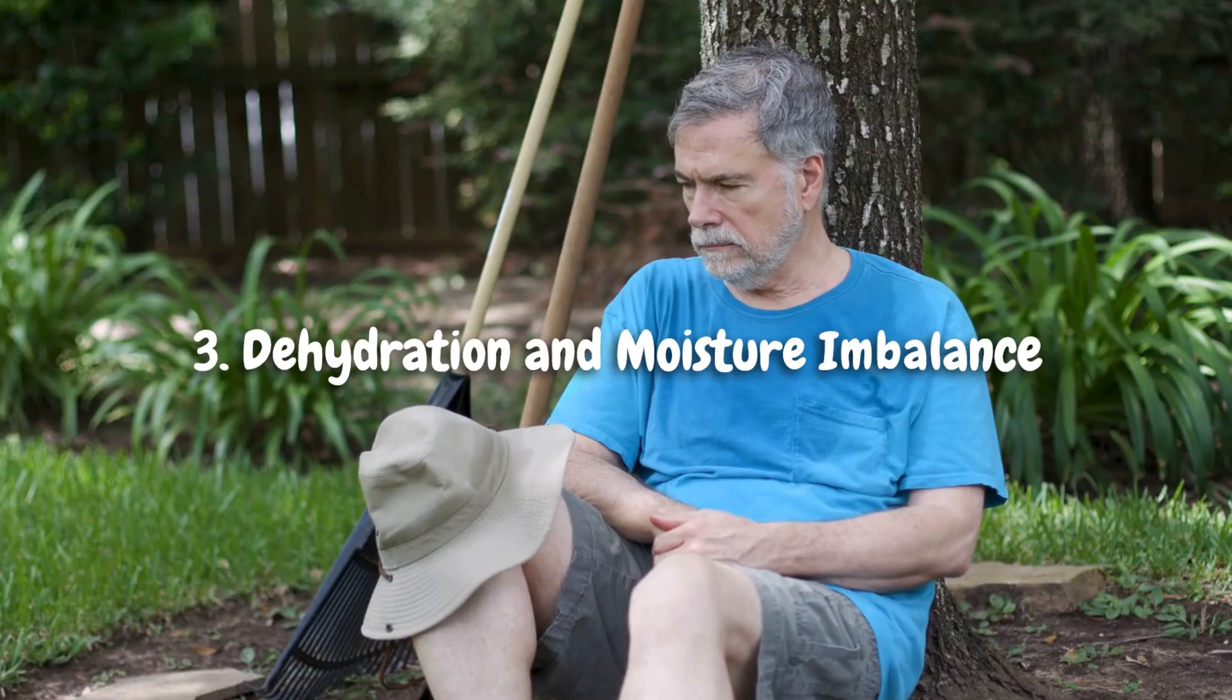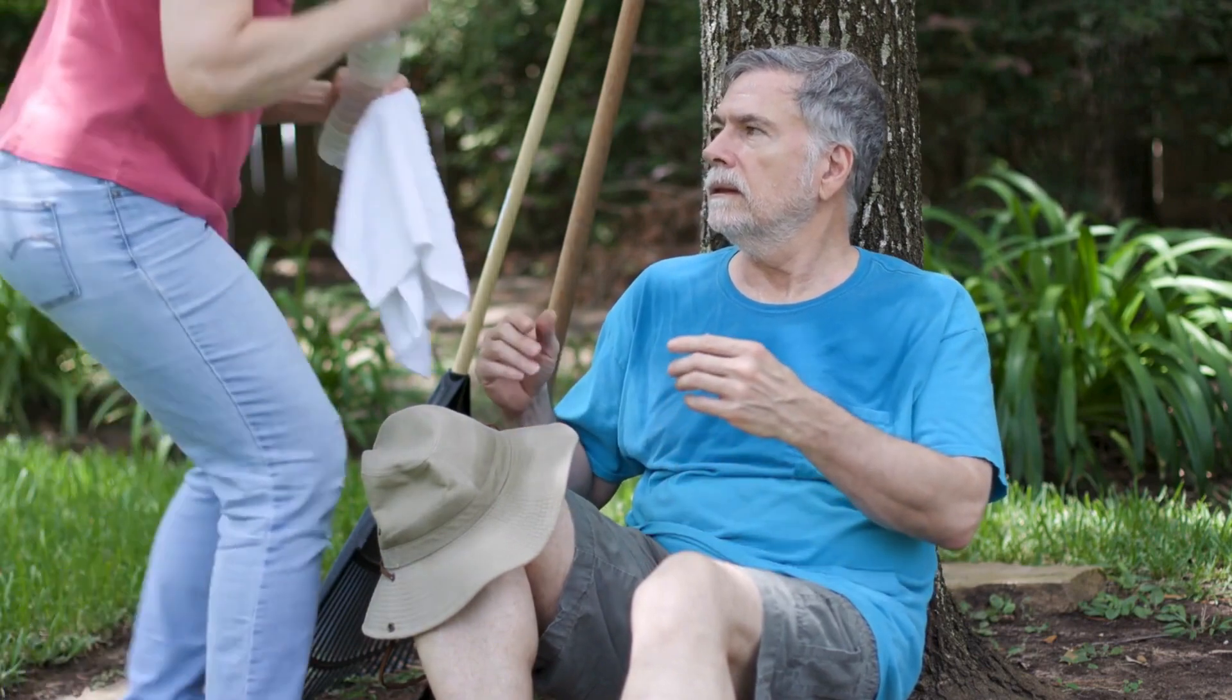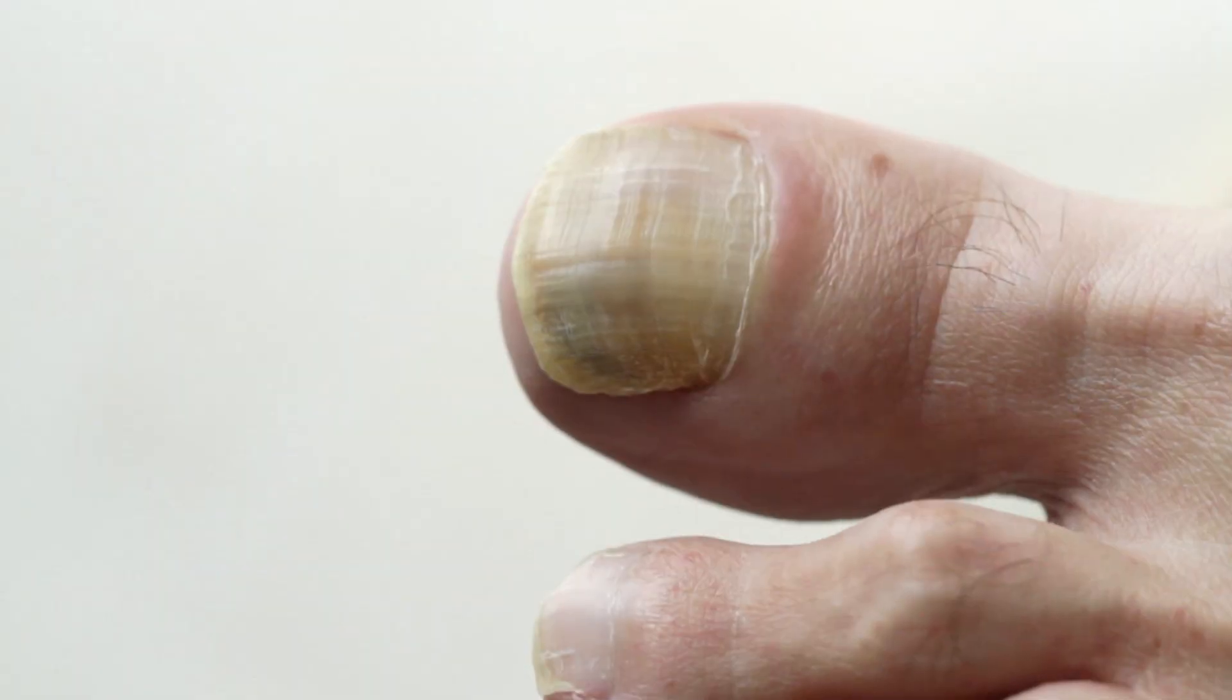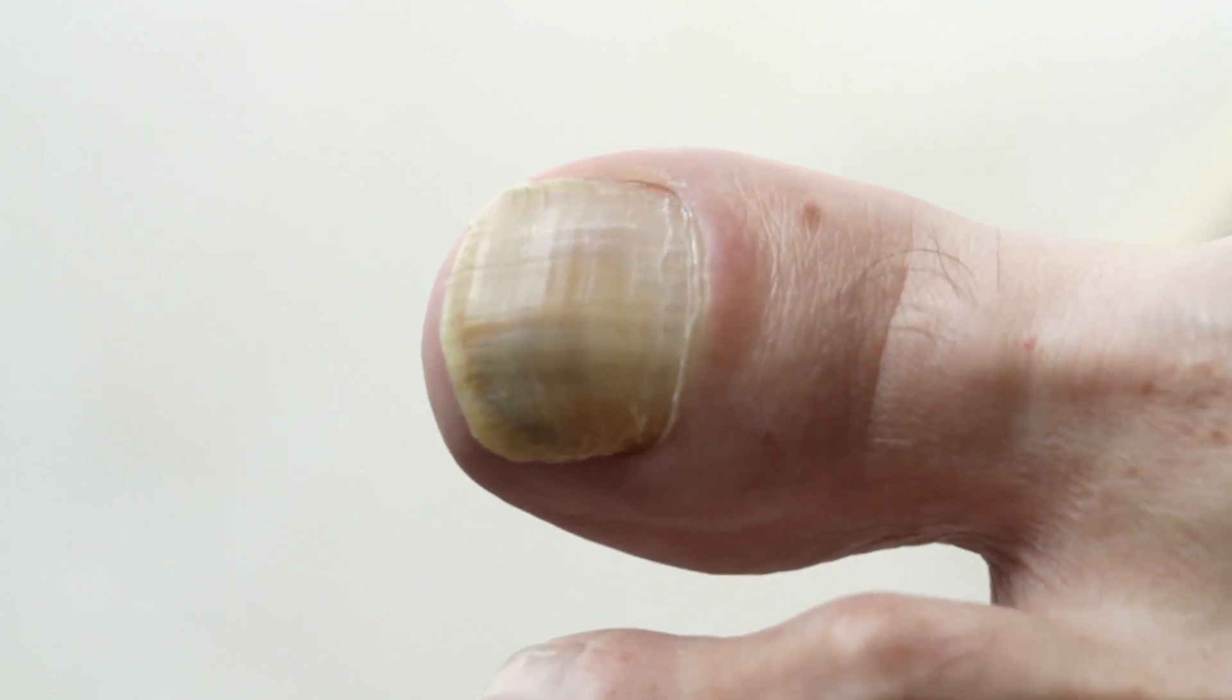3. Dehydration and Moisture Imbalance. Dry and dehydrated nails are more prone to developing vertical lines. Insufficient moisture can weaken the nail structure, leading to ridges and brittleness.